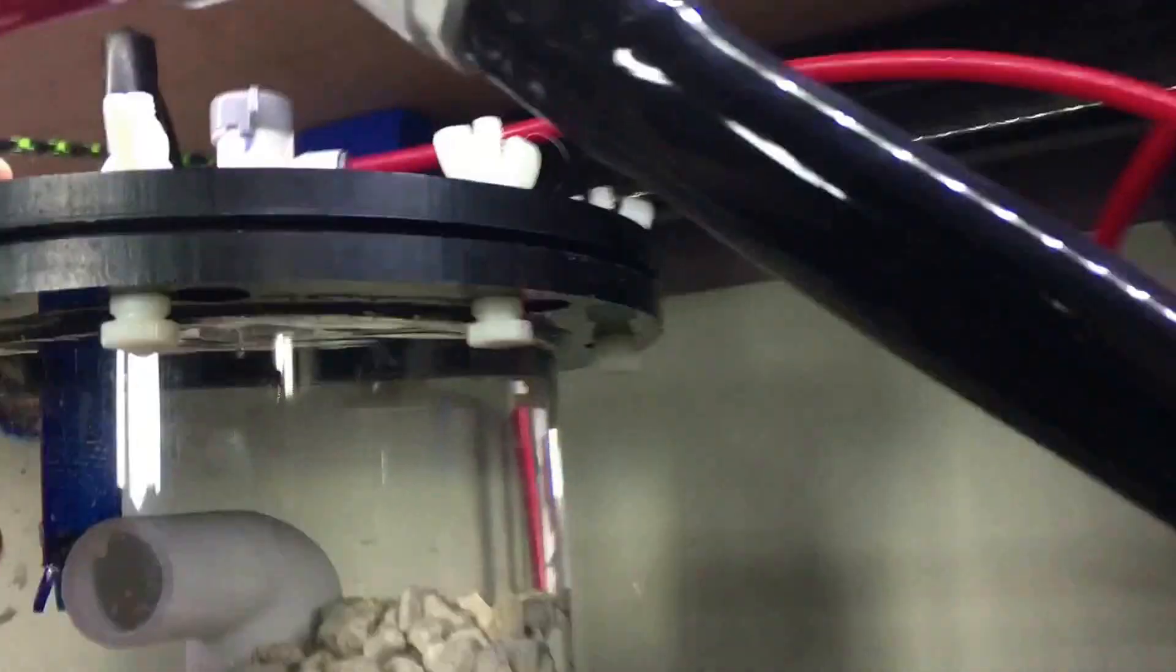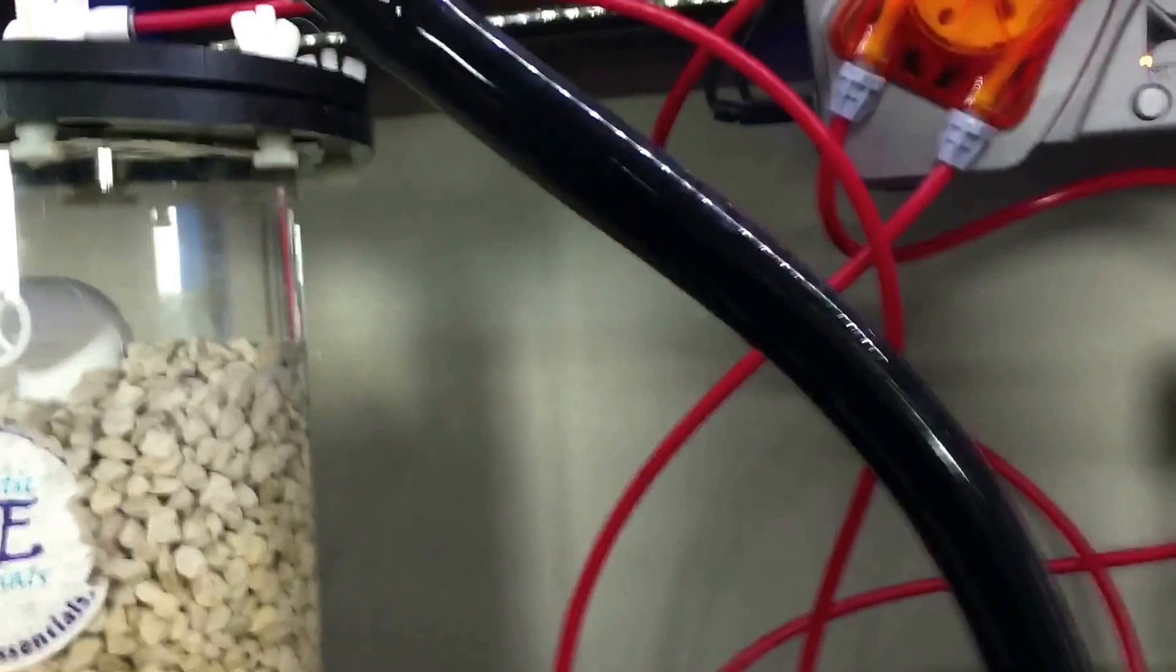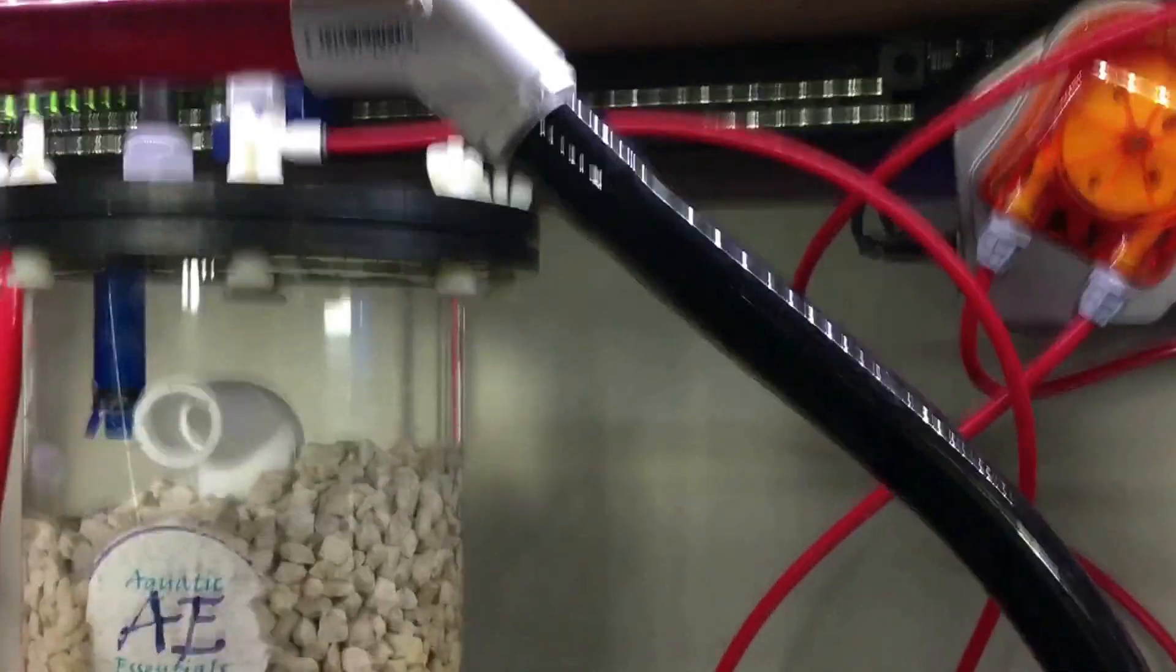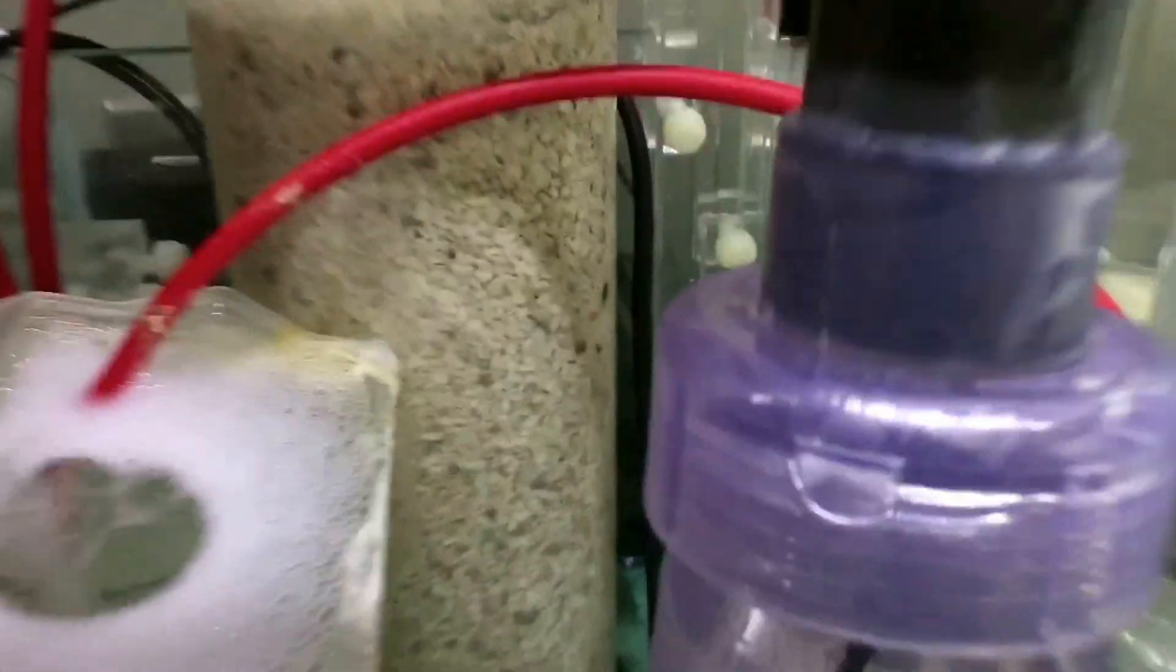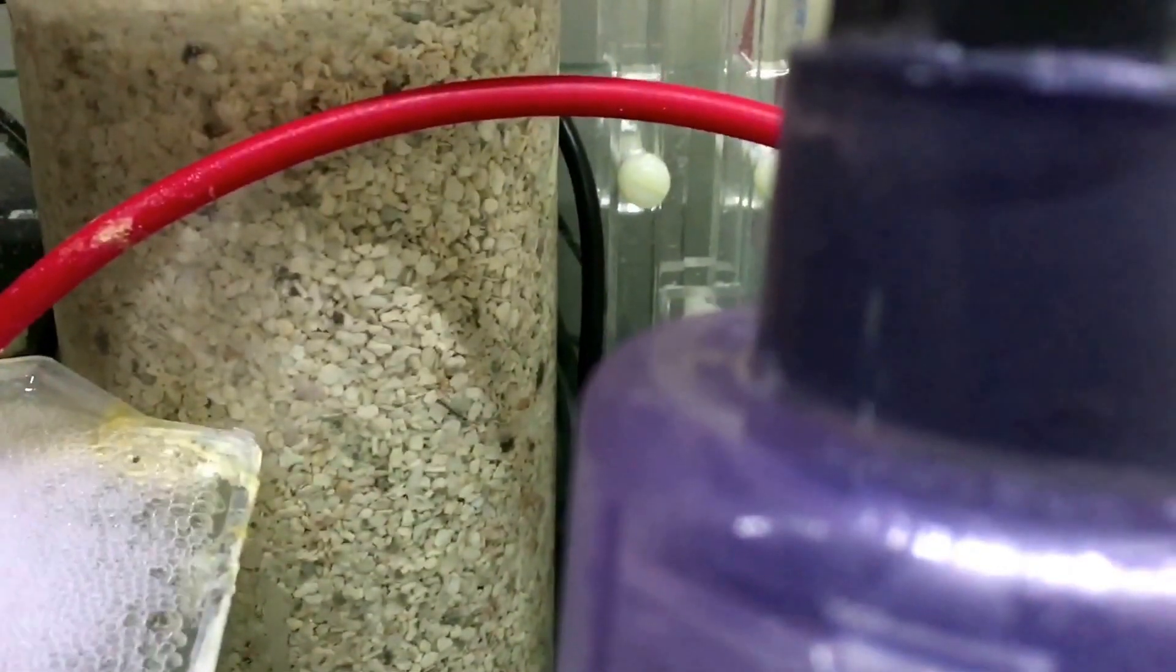A few tweaks that I did to the calcium reactor: previously it would drip straight into the tank. I've been trying to up my pH, so I added a second chamber to my calcium reactor. This one is full of really tiny crushed coral skeleton. It almost looks like sandbed material but bigger.